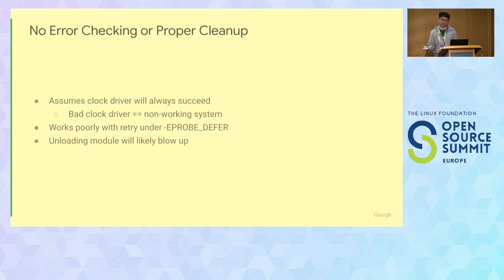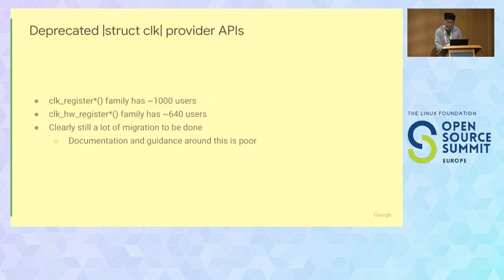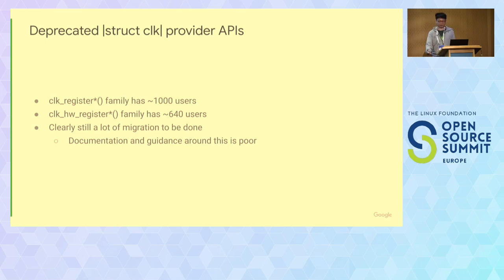That kind of makes sense because the clock driver is the most essential part of the system, so unloading it really doesn't get tested. Also, as mentioned, there was a move to separate the consumer side from the provider side, but the provider side still has these old struct clk APIs. A lot of drivers are still stuck with that, and it's been deprecated for about five years. We have around a thousand invocations in the kernel tree for the old APIs and around 600 for the new APIs — clearly there are still a lot of stragglers.